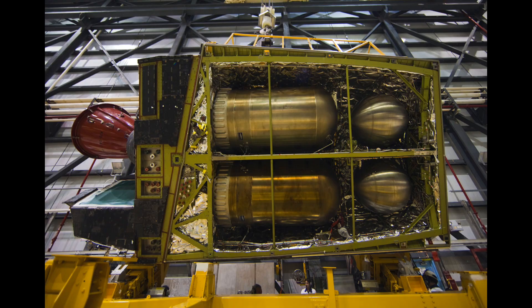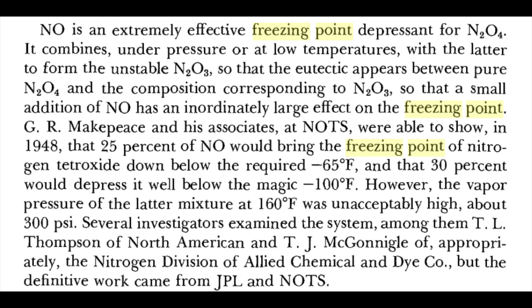For example, the Space Shuttle's orbital manoeuvring system used MON-3. And if there's a need to lower the freezing point from minus 11 Celsius to something more useful for space travel, MON-25 will give you liquids down to about minus 55 centigrade.